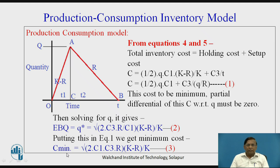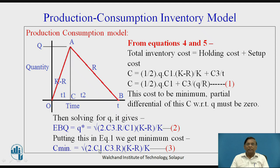Next is the minimum cost associated with this EBQ. Substituting q* back into cost equation number 1 and simplifying, we get the minimum cost, named C_minimum, given by formula number 3.